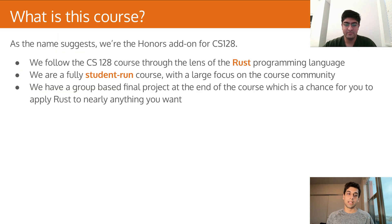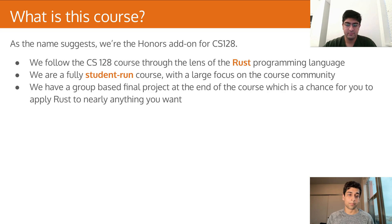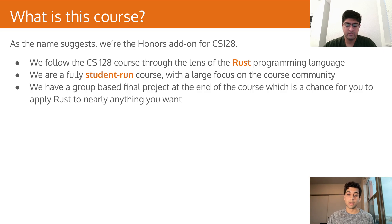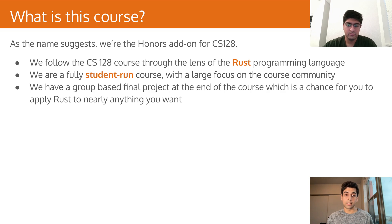So what is this course? As the name suggests, we're the honors add-on for CS128, the second course in the CS curriculum. We follow the CS128 course through the lens of the Rust programming language — so while CS128 teaches you about certain concepts in C++, we'll be mirroring those lectures with Rust. This course is fully student-run; both Rul and myself are undergrads, and our entire course staff and CAs are also all undergrads, so we have a large focus on the course community and learning new things together every day.